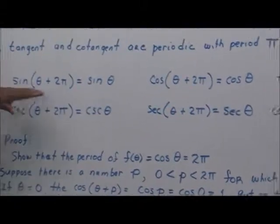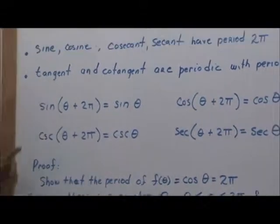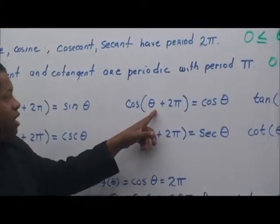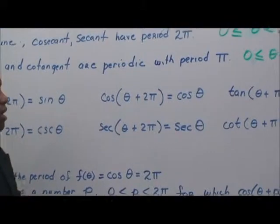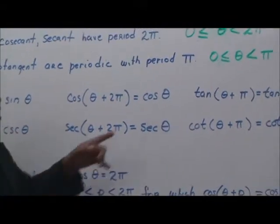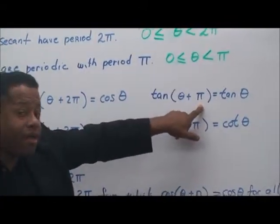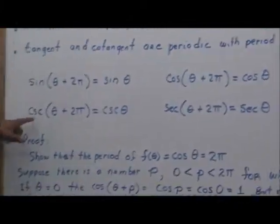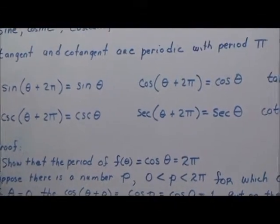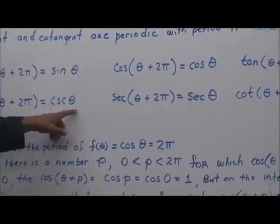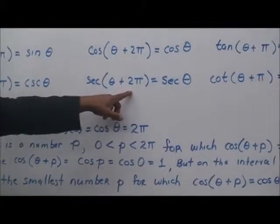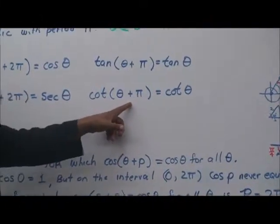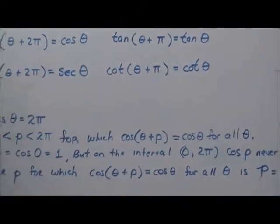To summarize the periodic expressions: sine(theta + 2π) = sine(theta); cosine(theta + 2π) = cosine(theta); tan(theta + π) = tan(theta); cosecant(theta + 2π) = cosecant(theta); secant(theta + 2π) = secant(theta); and cotangent(theta + π) = cotangent(theta).